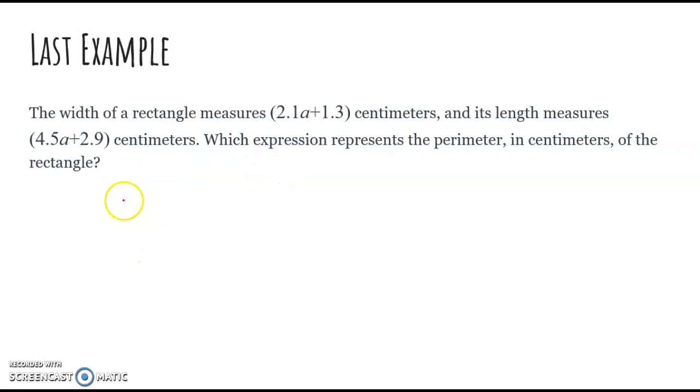Last example. The width of a rectangle measures 2.1a plus 1.3 centimeters, and its length measures 4.5a plus 2.9 centimeters. Which expression represents the perimeter in centimeters of the rectangle? So anytime you have a word problem, it might be good to draw what it's talking about. It's talking about a rectangle. So there's my rectangle. Its width is 2.1a plus 1.3.